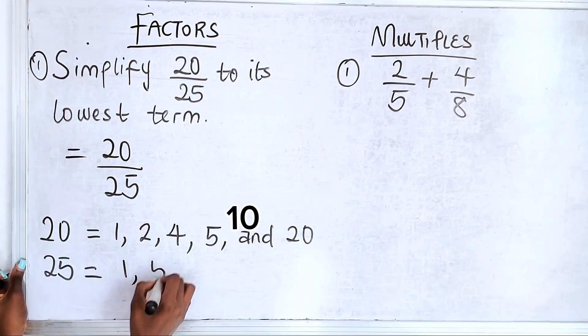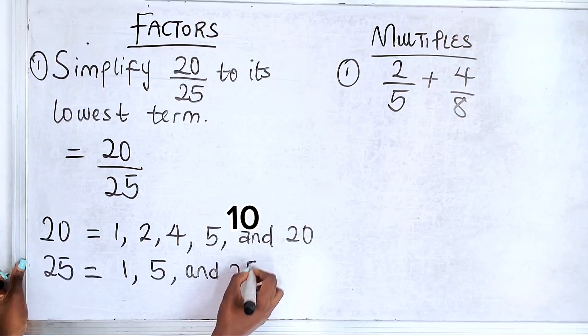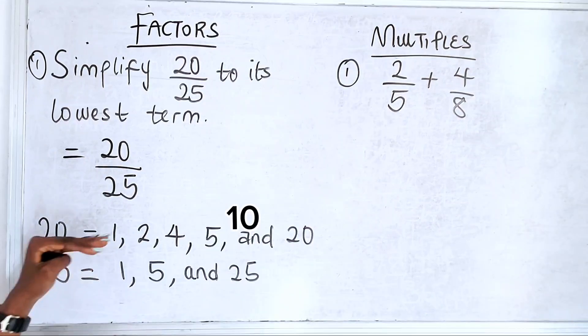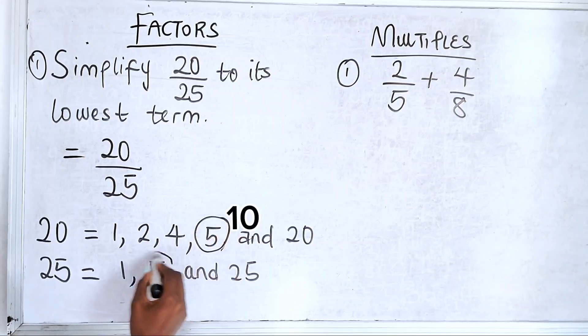You have 1, 5, and... What is the highest number between these two that's common? You have 5. You have 5.